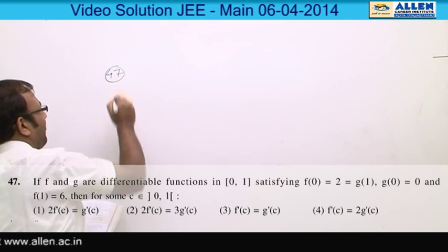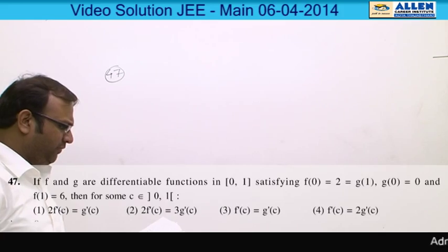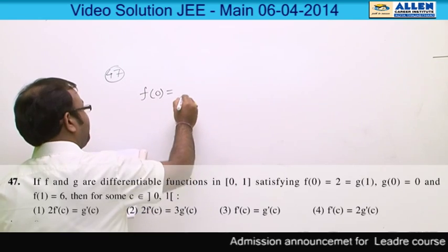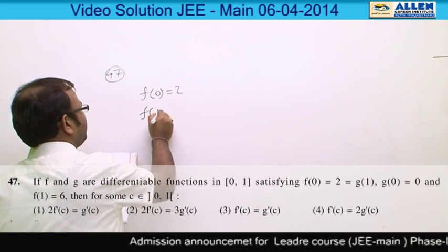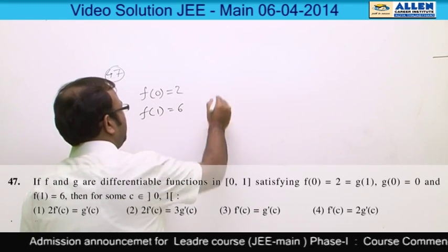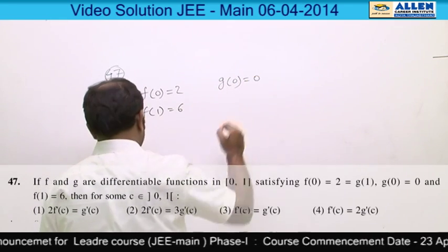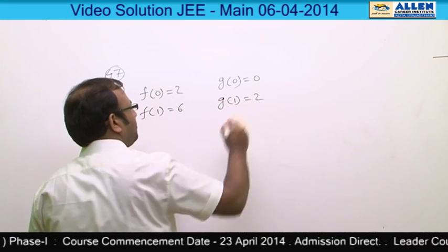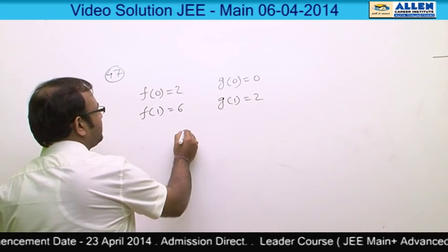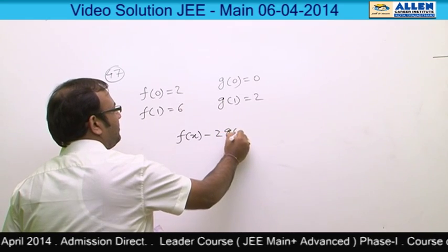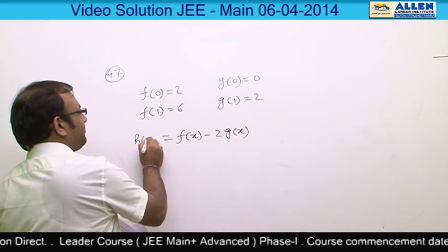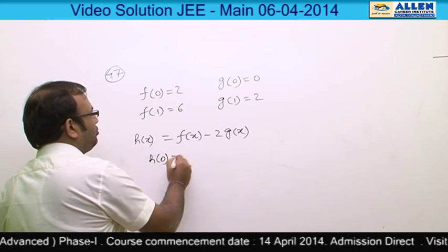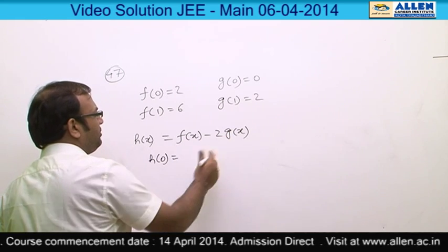Question 47: two differentiable functions are given with f(0) = 2, f(1) = 6, g(0) = 0, g(1) = 2. We define h(x) = f(x) - 2g(x). At h(0): f(0) = 2, g(0) = 0, so h(0) = 2.